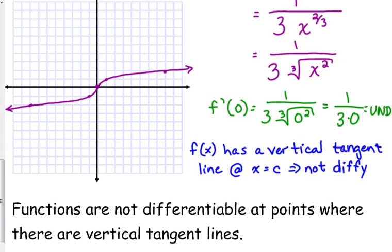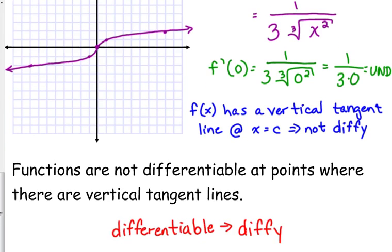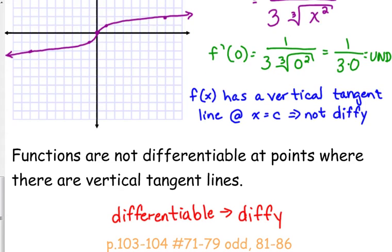So we have two cases where functions are not differentiable: at sharp points, and at vertical tangent lines — also known as locally linear. Those are exclusive of discontinuities: if the function is not continuous because of a hole or a vertical asymptote, of course you can't take the derivative. These are the two cases where the function is continuous but not differentiable.